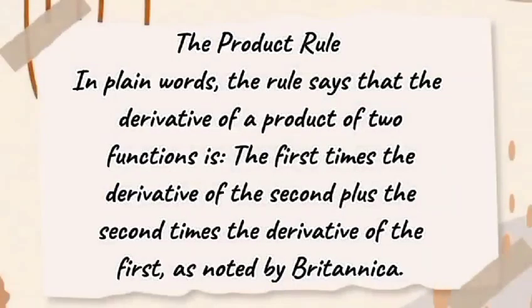The product rule. In plain words, the rule says that the derivative of a product of two functions is the first times the derivative of the second plus the second times the derivative of the first, as noted by Britannica.